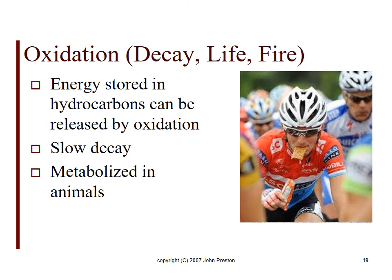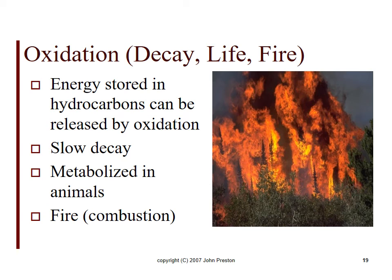This can be very slow. It can be moderately fast, it can be metabolized in animals. Here's an animal, one of us, eating some hydrocarbons. What we do is we take in the hydrocarbons, our body metabolizes it, in other words, it oxidizes it. It produces carbon dioxide which we breathe out, and water vapor which we breathe out. That gives us energy. So we get energy from eating food, as do other animals. Or the energy can be released rapidly, which we call fire or combustion. So when you see a forest fire, that's the solar energy that was stored there during the tree's lifetime. It's now being released all at once.